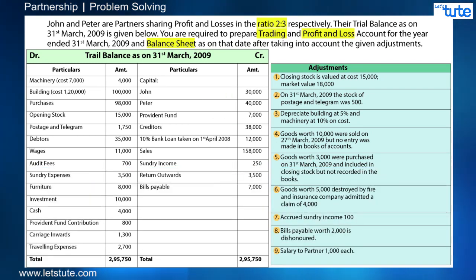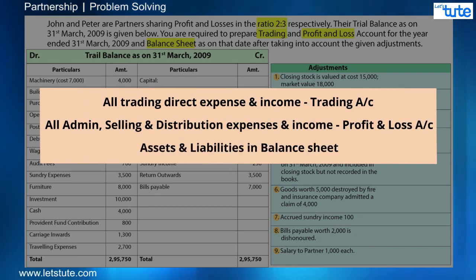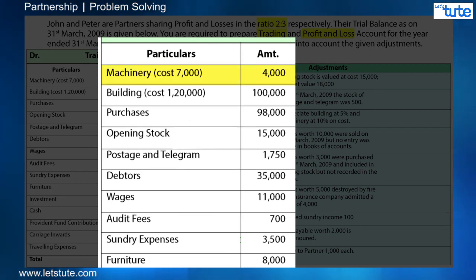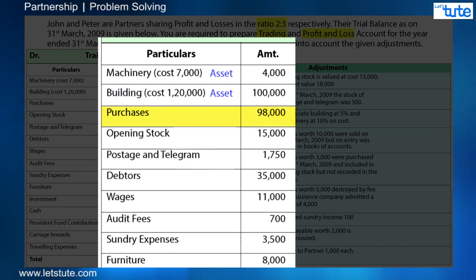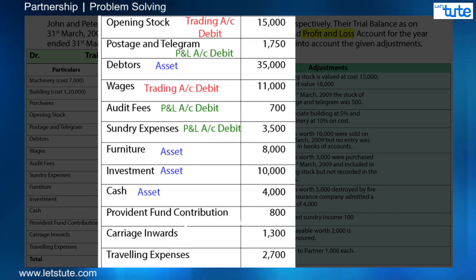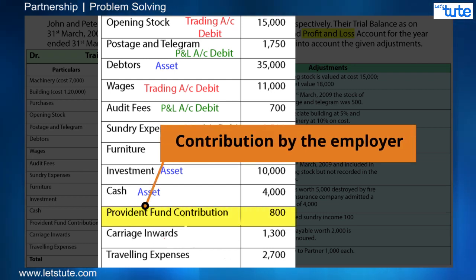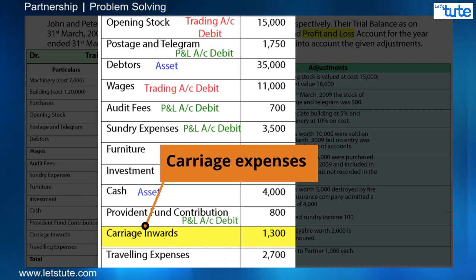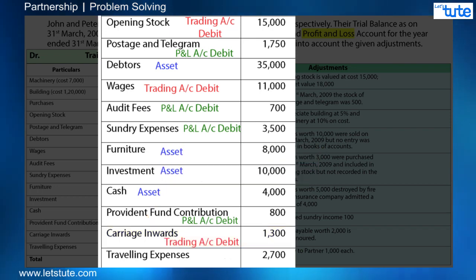Before moving ahead, just remember this. Let's start with the debit side of the trial balance: machinery will go to the asset side, building will go to the asset side, purchases go to trading account debit side, and so on. For provident fund contribution — it is a contribution by the employer and is part of salary expense, so it will be debited to the P&L account. Carriage inwards is a carriage expense for purchases, so it will go to the trading account debit side.